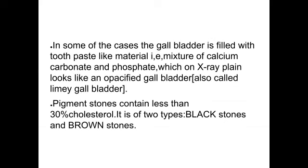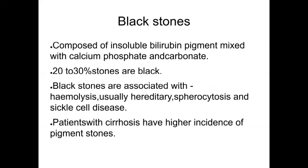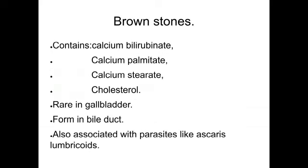In some cases the gallbladder is filled with toothpaste-like material — a mixture of calcium carbonate and phosphate — which on X-ray appears as an opacified gallbladder, also called limey gallbladder. Pigment stones contain less than 30% cholesterol and are of two types: black stones and brown stones. Black stones are composed of insoluble bilirubin pigment mixed with calcium phosphate and bicarbonate, comprising 20-30% of stones, and are associated with hemolysis — hereditary spherocytosis and sickle cell disease. Patients with cirrhosis have a higher incidence of pigment stones. Brown stones contain calcium bilirubinate, calcium palmitate, calcium stearate, and cholesterol; they are rare in the gallbladder, formed in bile ducts, and associated with parasites like Ascaris lumbricoides.